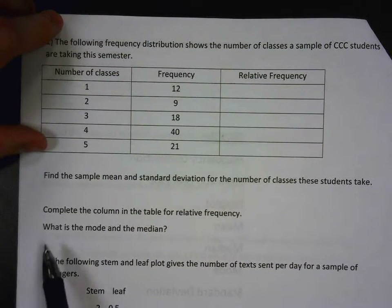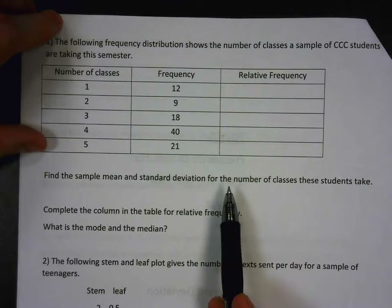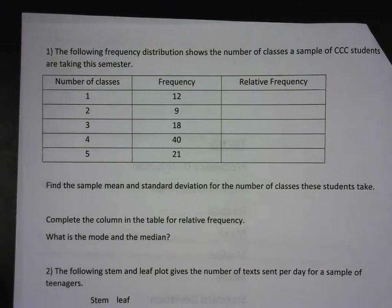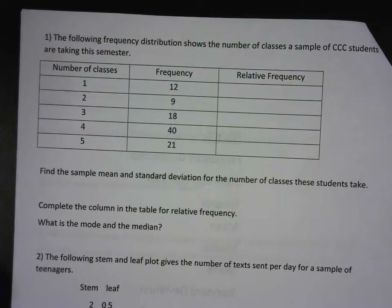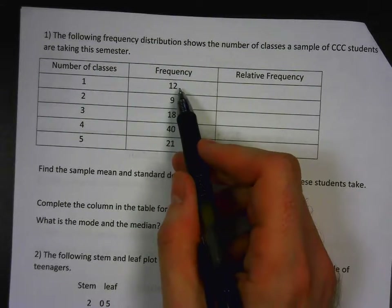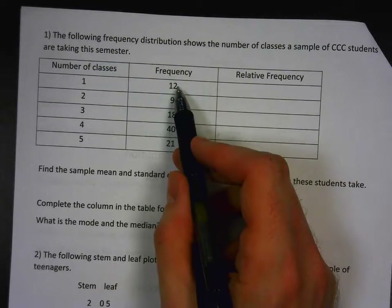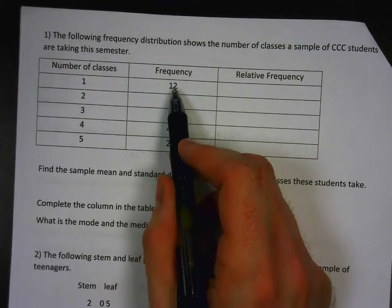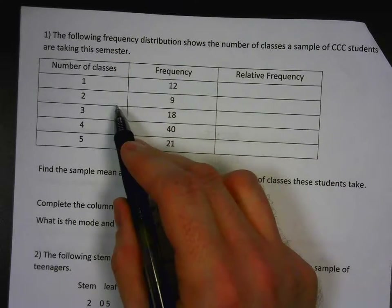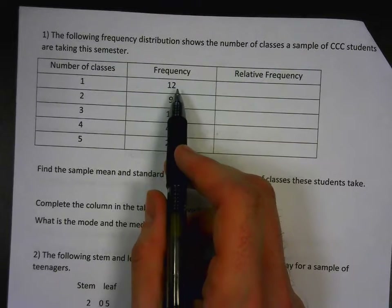To find the sample mean, you want to add up all the data values and then divide by the number of data values. The frequency column tells you how many of each data value you have — 12 students took one class, nine took two, 18 took three, and so on. It's annoying to add one to itself 12 times, two to itself 9 times, three to itself 18 times, and so on, so we'll use the calculator.